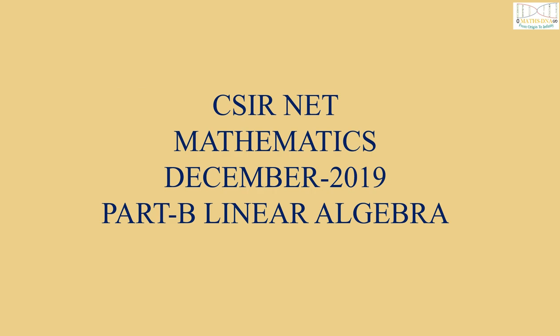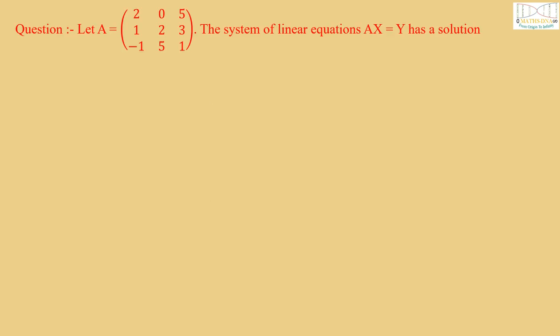Today we are going to solve a question of CSIR NET Mathematics December 2019 Part B Linear Algebra. The question is: Let A be a 3 by 3 matrix with entries 2, 0, 5, 1, 2, 3, and -1, 5, 1.